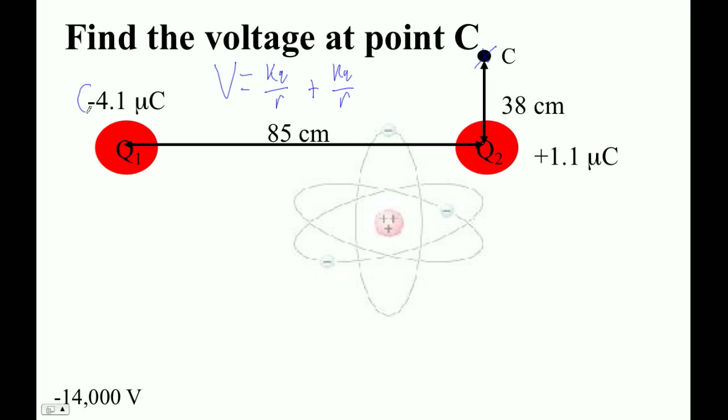Now notice that this guy is negative, and this guy is positive, so we've got to do that correctly. So the voltage at C is 8.99 E9 times—and then I'm going to do this guy first, due to Q1, right?